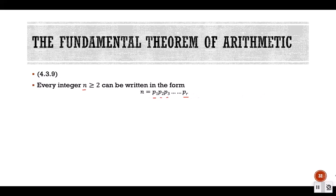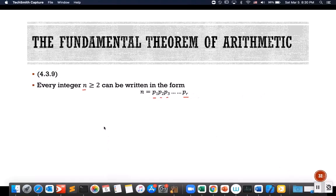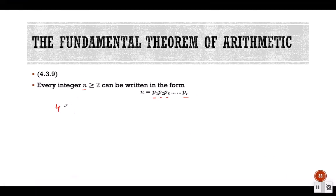Let's look at some examples. We can represent 4 as 2 × 2, and both 2s are prime numbers. We can represent 8 as 2 × 2 × 2. We can represent 15 as 3 × 5.